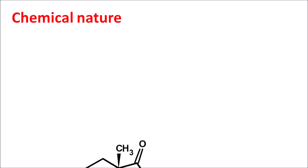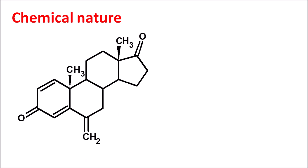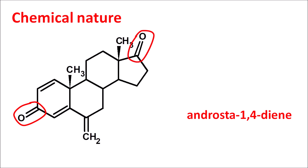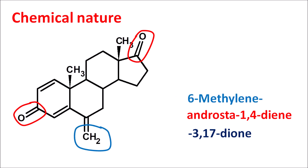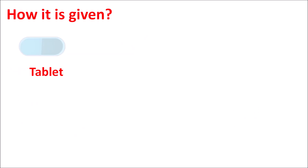Regarding the chemical nature of exemestane, its structure contains a steroidal nucleus — specifically the androstane nucleus with two double bonds, two ketone groups at the 3rd and 17th positions (a 3,17-dione), and a methylene group attached at the 6th position. So the complete chemical name reflects a 6-methylene androstane-3,17-dione structure.